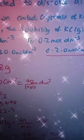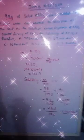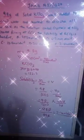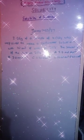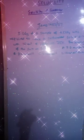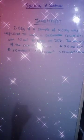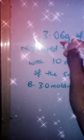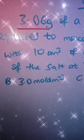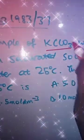Now try the next question on your own. Pause it, then check the solution afterwards. Here is the next question: 3.06 grams of a sample of KClO₃ was required to make a saturated solution with 10 cm³ of water at 25°C. The solubility of this salt at 25°C is? Pause the video and try it on your own, then compare your answer to the solution. Mass = 3.06 g, volume = 10 cm³, substance = KClO₃, molar mass = 39 + 35.5 + 48 = 122.5 g/mol.